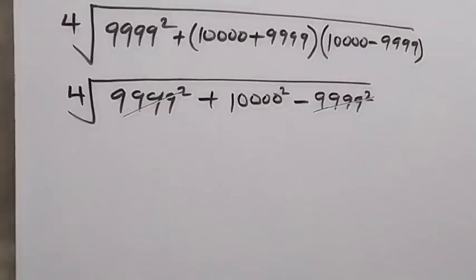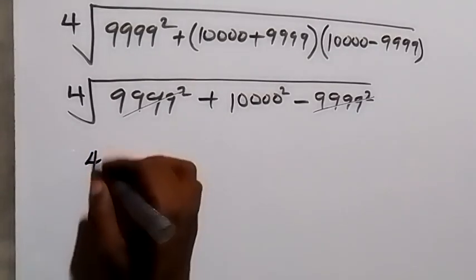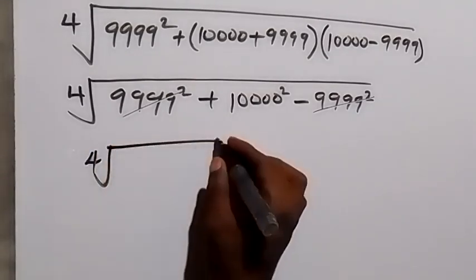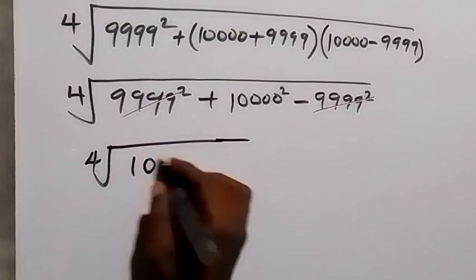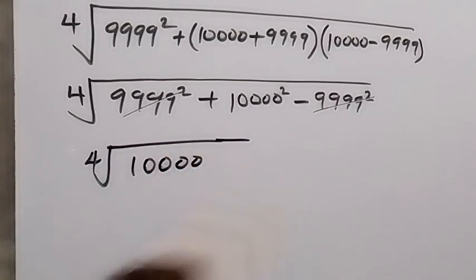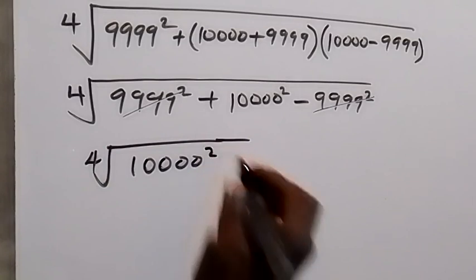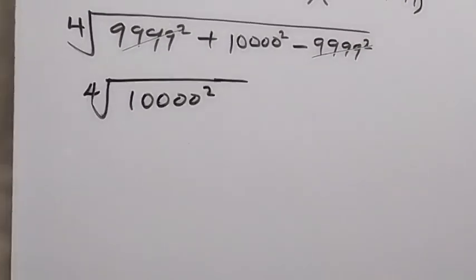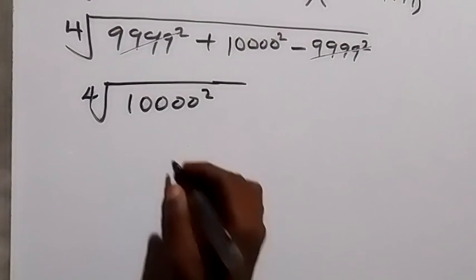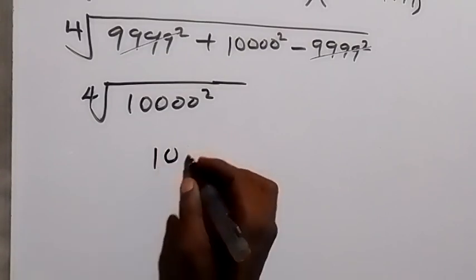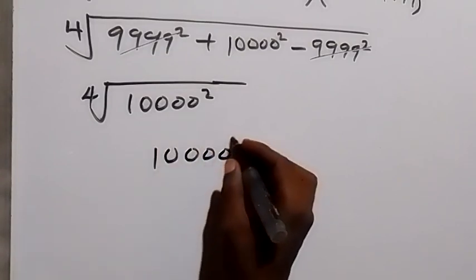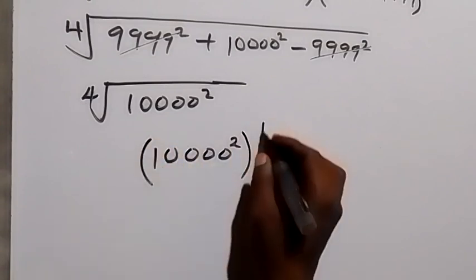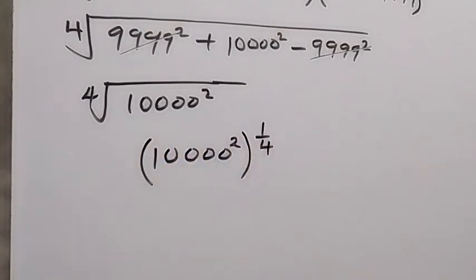We are left with the fourth root of 10,000 squared. The fourth root can also be written as raising to the power of 1 over 4. So we have 10,000 squared, raised to the power 1 over 4.